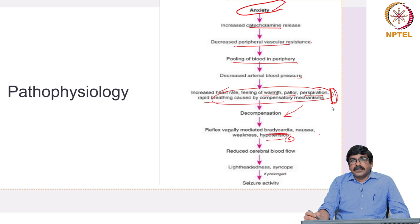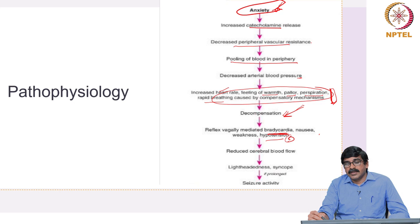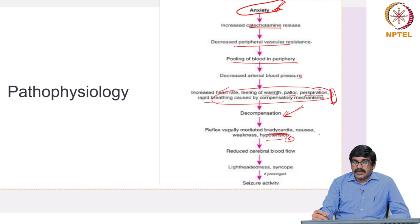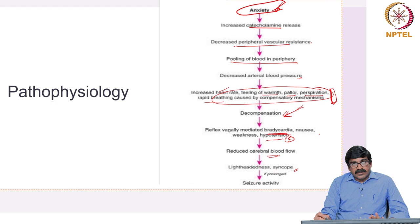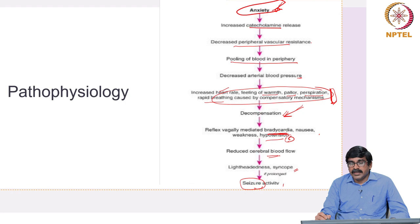When the stress factor is too strong, the sympathetic system cannot counteract, so the parasympathetic system or decompensatory mechanisms come in, causing bradycardia and hypotension. Blood supply is further reduced to the brain, there is reduced cerebral blood flow leading to lightheadedness, and the patient starts developing syncope or loss of consciousness. If the syncope is not treated adequately or sooner, the patient can also develop seizure activity — seizures caused by hypoglycemia or hypoxia, not epileptic seizures.